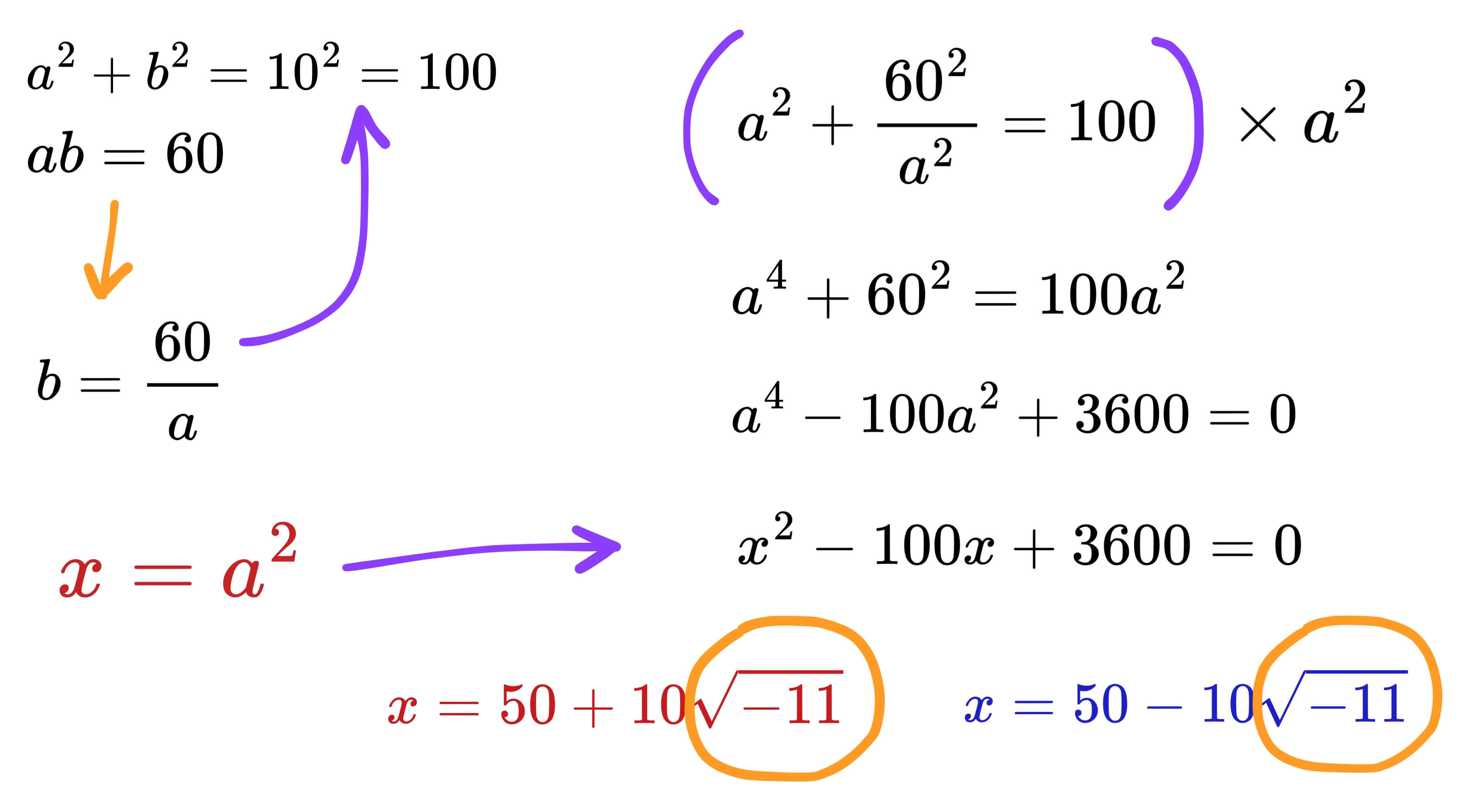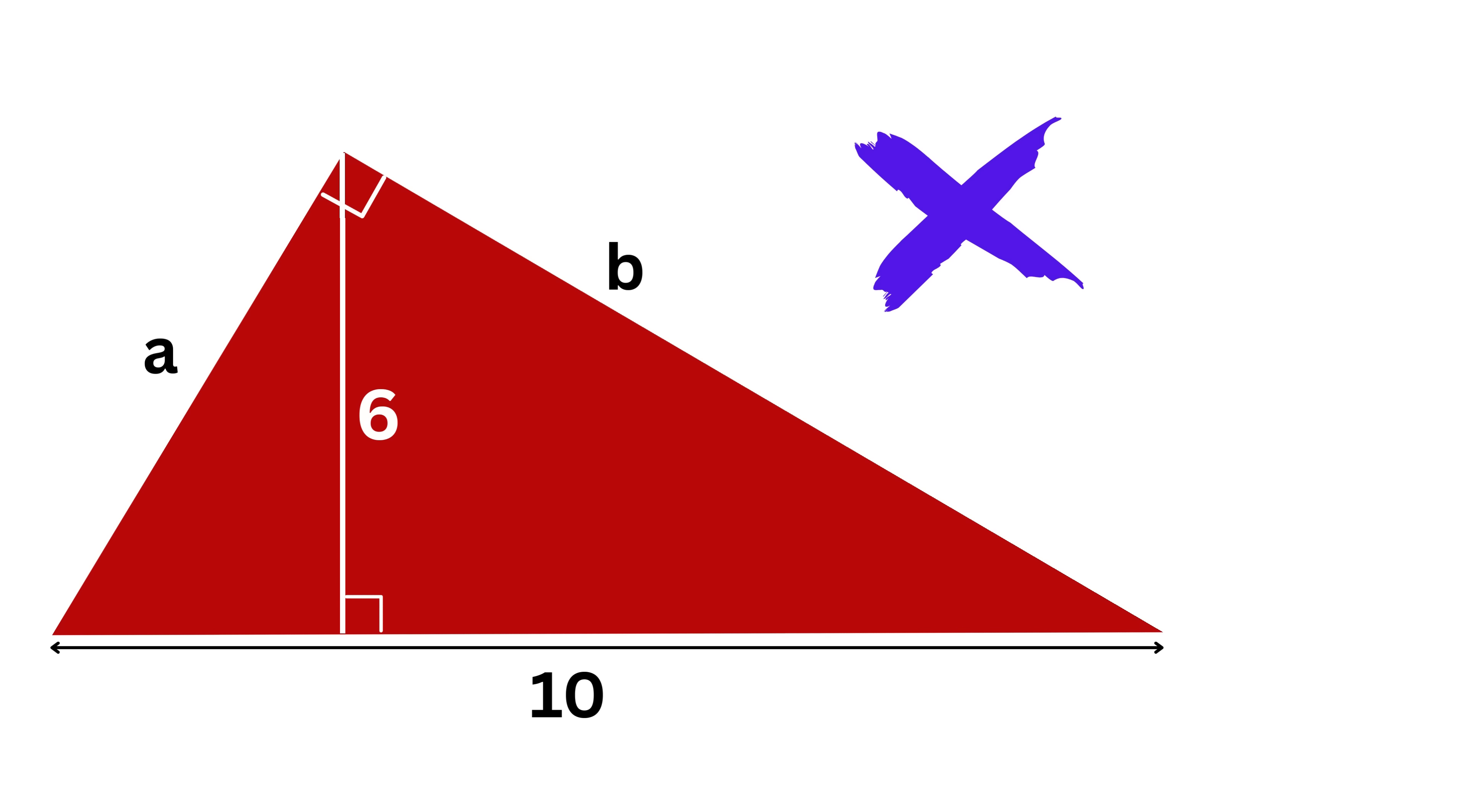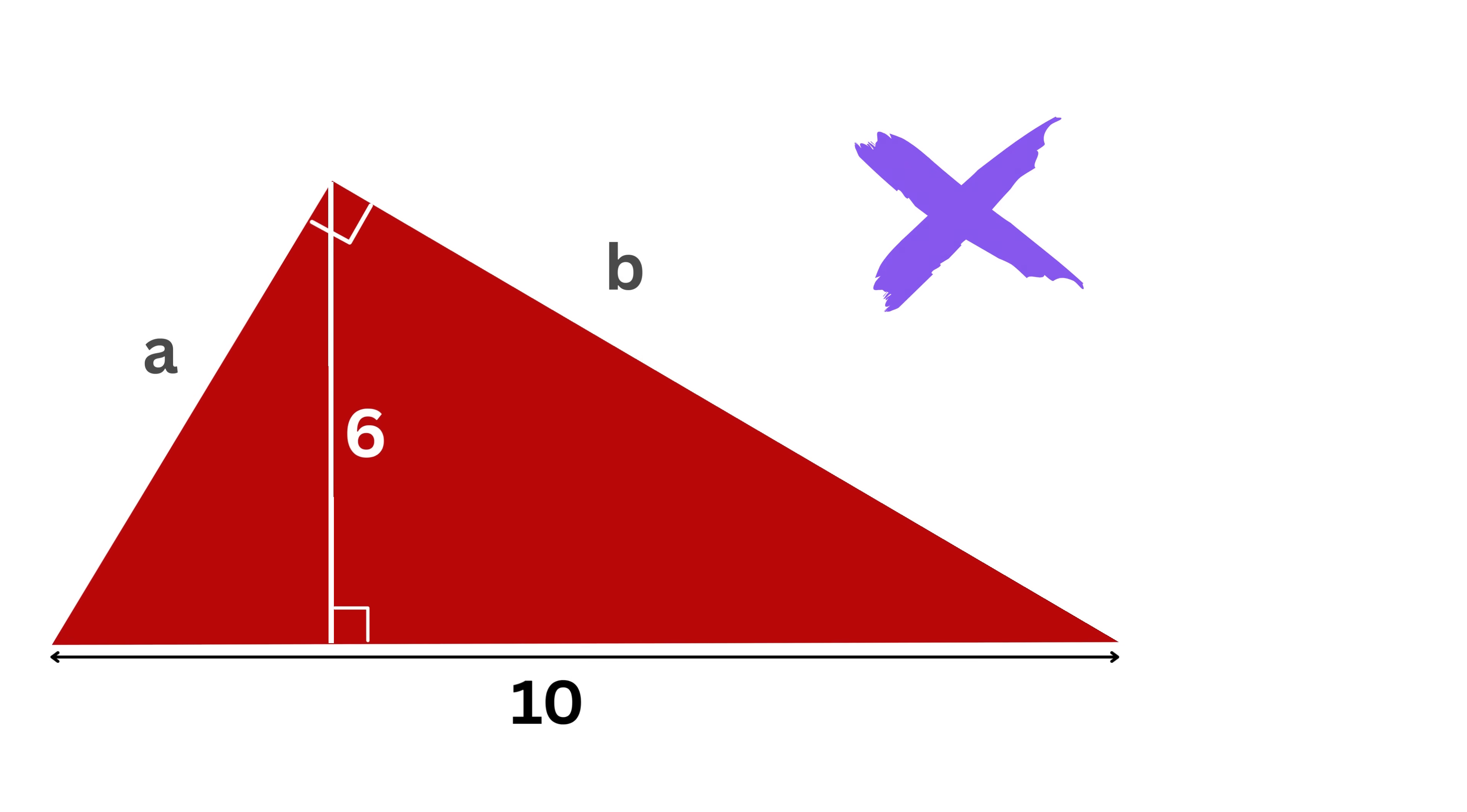Wait, what? This means we're taking the square root of a negative number. That means there is no real solution for X, which in turn means there is no real solution for A and B as well, which means such a triangle cannot exist in real life.